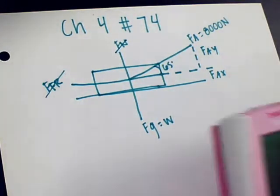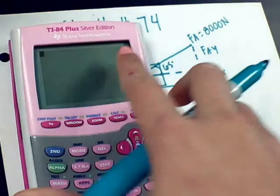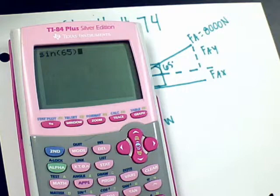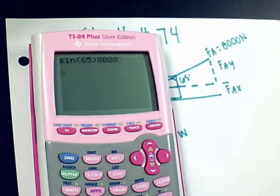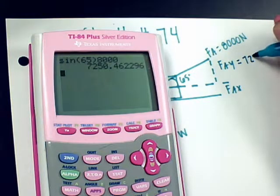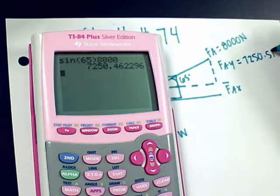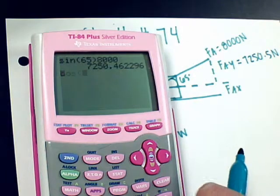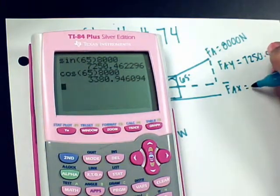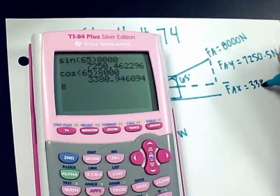So we can solve for our F_AY and our F_AX. F_AY is going to be the sine of 65, which is our angle, times 8,000 newtons, which is equal to 7,250 newtons. And then our F_AX will be cosine of 65 times 8,000 newtons, giving us 3,380.9 newtons.